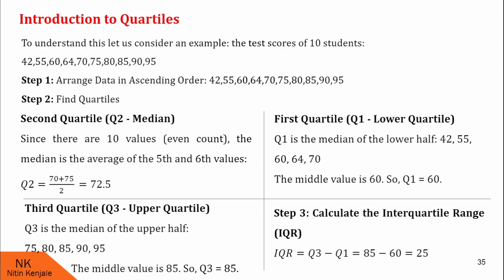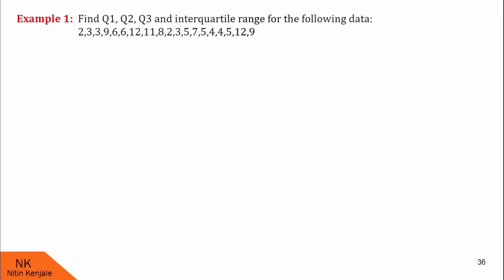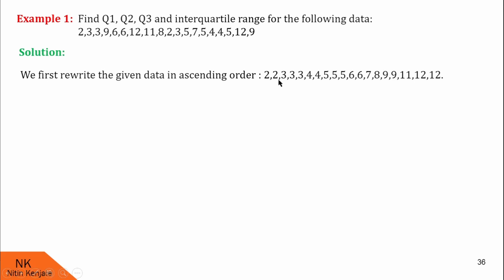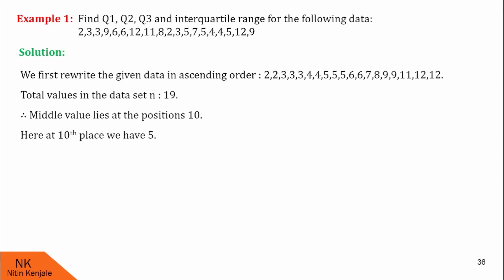Now let us see some more examples. In this first question, we are asked to find Q1, Q2, Q3, and the interquartile range for the following data. This data is not arranged in ascending order, so we first arrange and rewrite it in ascending order. The total values in this dataset are 19, which is an odd number. Therefore the median lies at the 10th place, and the 10th value is 5. Therefore the median of this data is 5, and since the median is quartile 2, Q2 is 5.